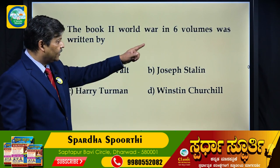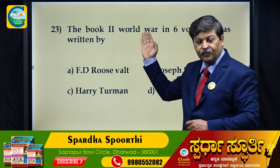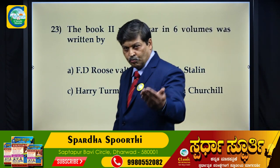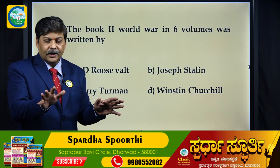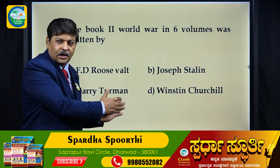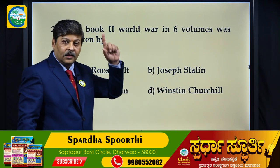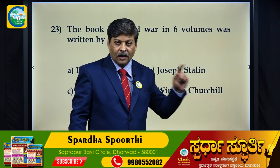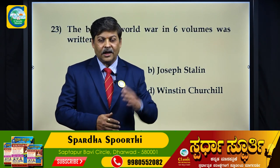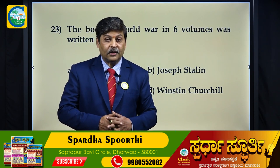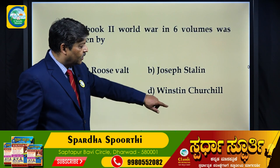The book Second World War in six volumes was written by whom? The options are F.D. Roosevelt, Joseph Stalin, Winston Churchill, and Harry Truman — all witnesses to the Second World War. The answer is England's Prime Minister Winston Churchill. For writing this six-volume book on the Second World War, Churchill was awarded the Nobel Prize in Literature. He was a great writer as well as an eyewitness to the war.